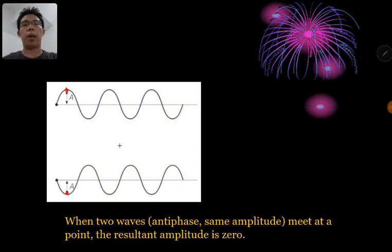And so do other pairs of the points along the wave, as they meet at that point, they will actually always cancel off each other. Because when one is up, then the other will be down. So it's like the opposite pair of the displacement that they will cancel off each other.